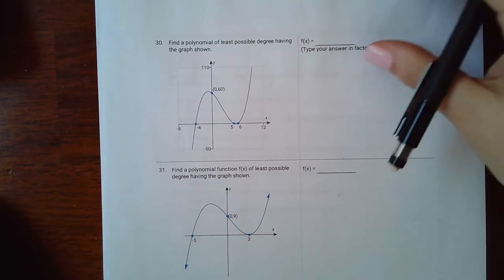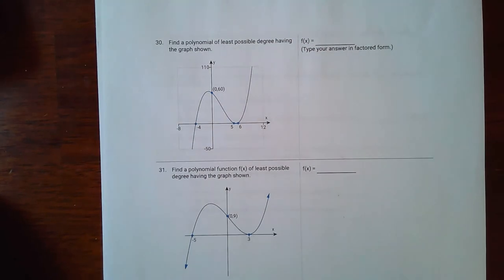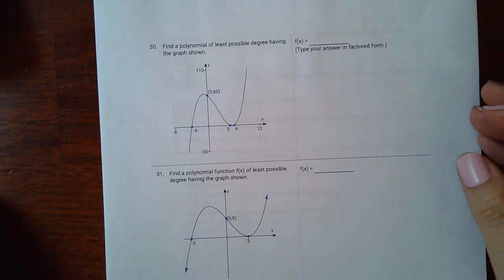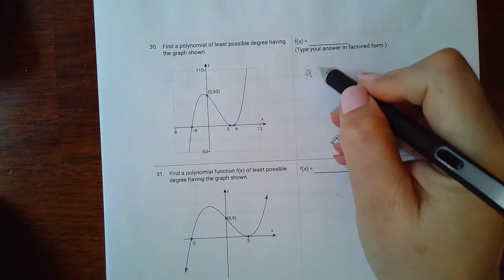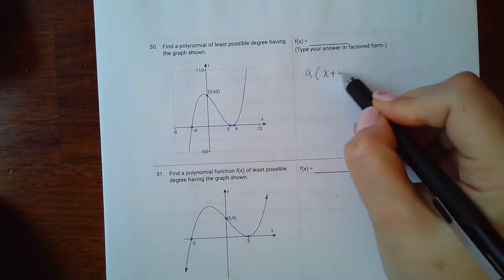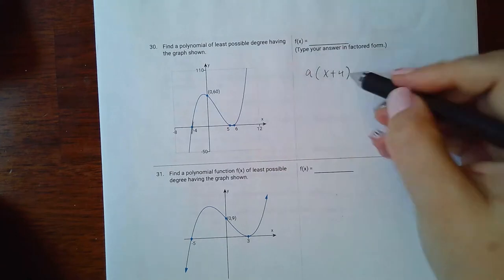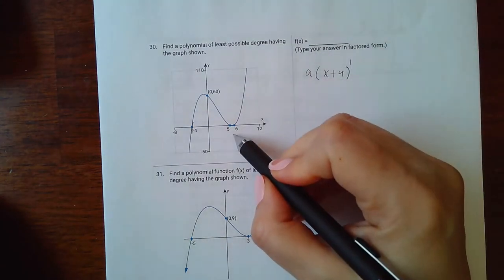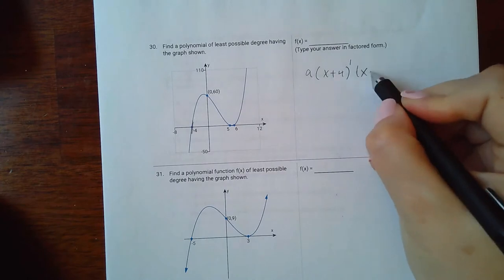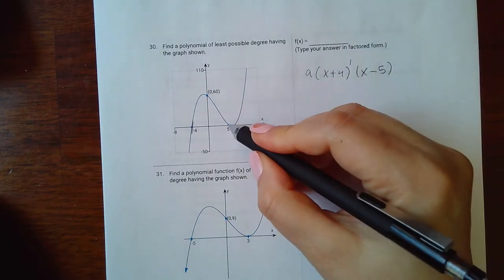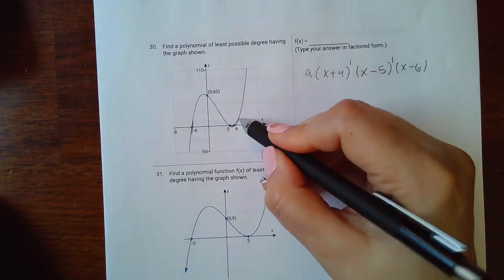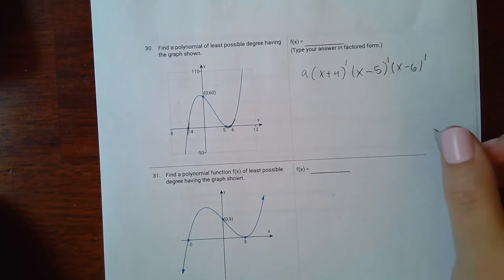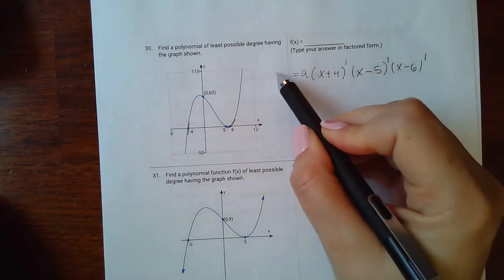We're here at number 30. Find a polynomial of least possible degree having the graph shown. We know it's going to be a times x plus 4 — since it goes through with an exponent of 1. There are two different x-intercepts, so we have x minus 5 with exponent 1, and x minus 6 with exponent 1. That should be our f of x.